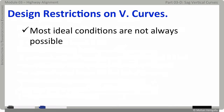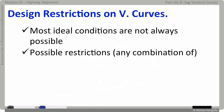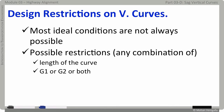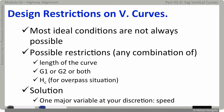There are going to be lots of challenges while designing vertical curves — most ideal conditions are not always possible. Depending on site conditions, there can be restrictions on any combination of variables: length of the curve, initial grade G1, tangent grade G2, or clearance height HC. As engineers, we have one variable under control, which is speed — work with it and redesign. Often the redesign is a trial and error process.